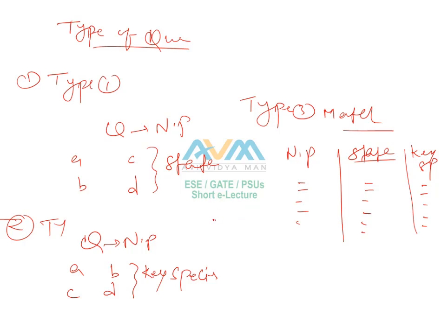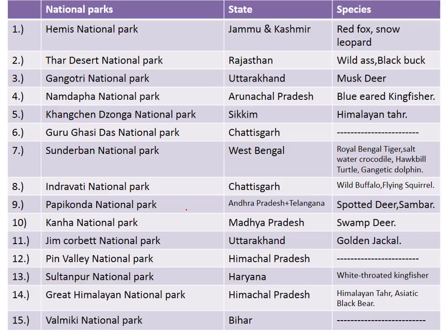Here are some important national parks of India. The first is Hemis National Park, situated in the state of Jammu and Kashmir, famous for the red fox and snow leopard. Second is the Desert National Park, situated in Rajasthan, famous for the wild ass and blackbuck. Third is the Gangotri National Park in Uttarakhand, famous for the musk deer.